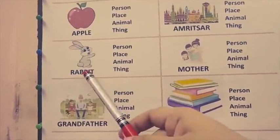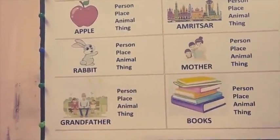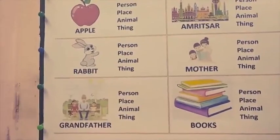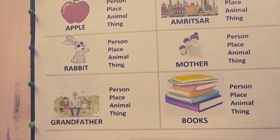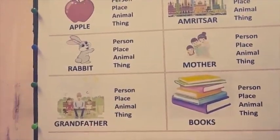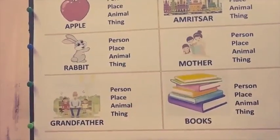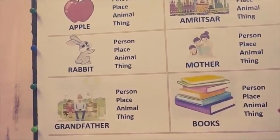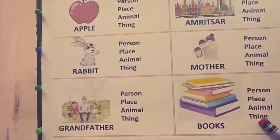Rabbit — is it a person, place, animal or a thing? Yes, it's an animal. Mother — is it a person, place, animal or a thing? Yes, it's a person. Grandfather — is it a person, place, animal or a thing? Yes, it's also a person. Lastly, the books — person, place, animal or a thing? Yes, these are things.